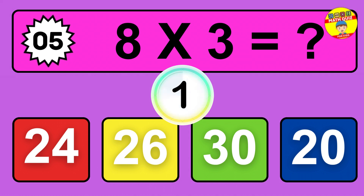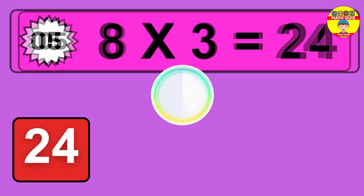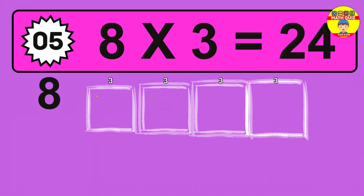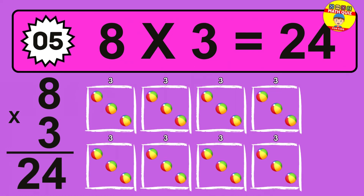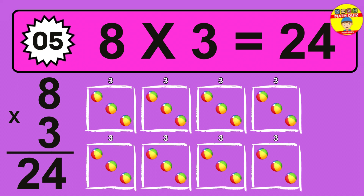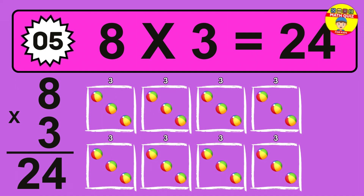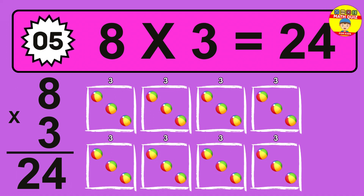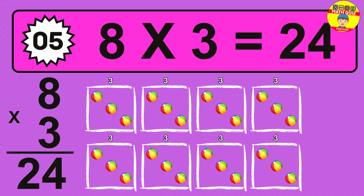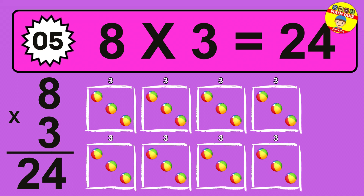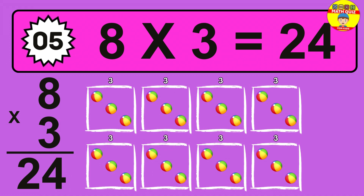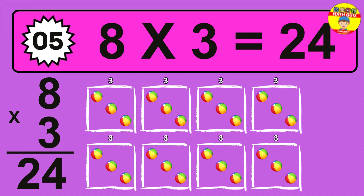The answer is 8 times 3 is 24. To calculate, we have 8 groups with 3 balls each one. So, how many balls do we have? 24 balls.